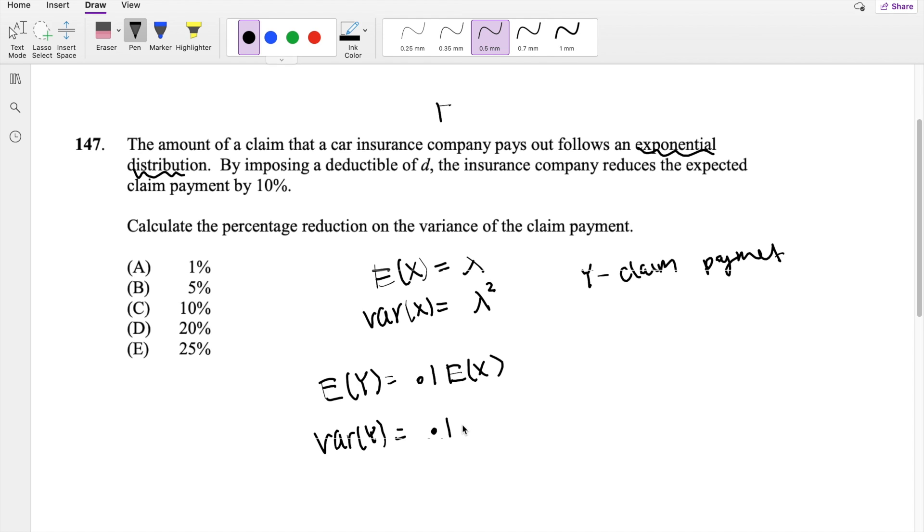This is going to be equal to 0.1 expectation of X, the whole thing squared. So then the variance, actually, the reduction of variance was just 0.01 or 1%, which is your answer A.